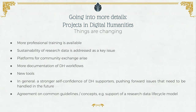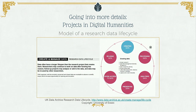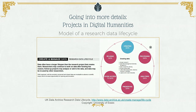The idea in digital humanities is to build and support a research data lifecycle. One example is the model from the UK Data Archive. You see the different steps: you start by creating data, then process it, analyze it, preserve it, give access to the data, and — most importantly — reuse the data. In theory, the circle starts again: data from one project flows into another and is steadily enhanced.